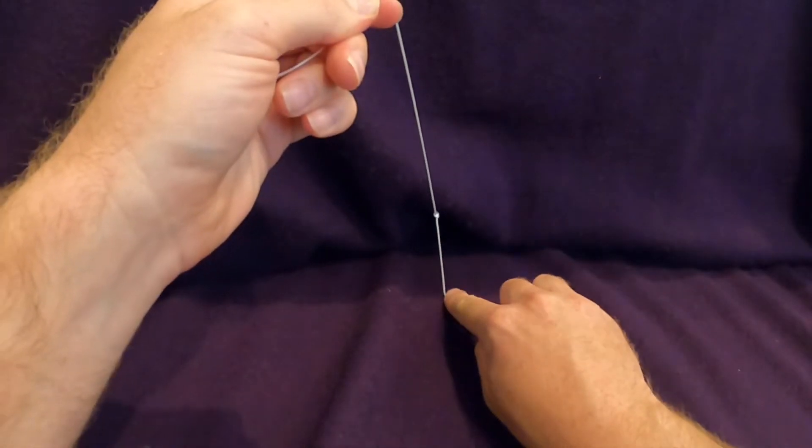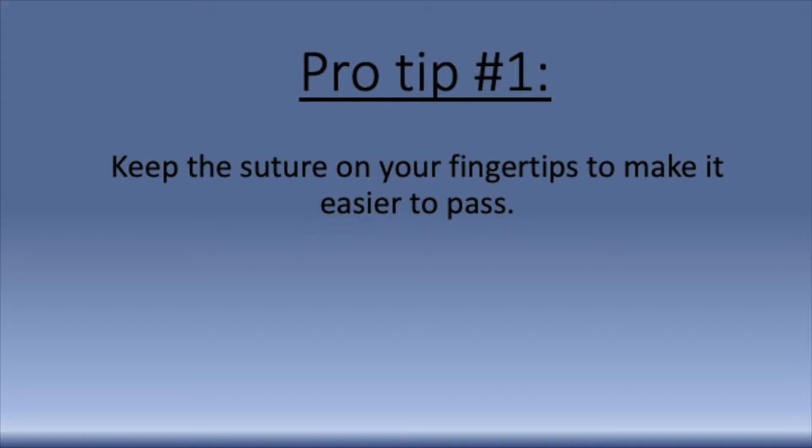The second throw is performed by using the index finger to wrap the suture and bring it through the loop. Keeping the suture on the fingertips makes it much easier to pass through the loops.